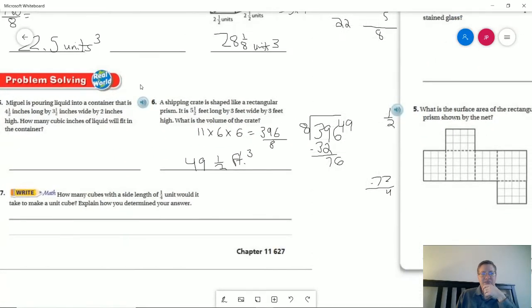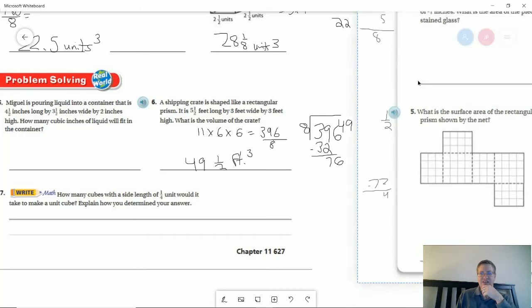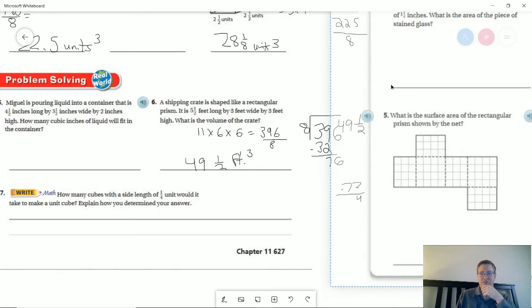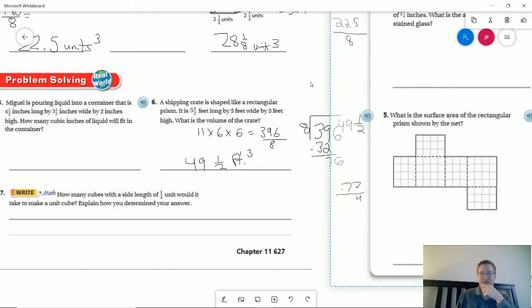Number 6. Shipping crate is shaped like a rectangular prism. So what I did was I doubled everything and then divided by 8 after I multiplied. So 11 times 6 times 6 is 396 divided by 8 would give us 49 and a half feet. Yeah, it looks like this was all attached to this at some point.